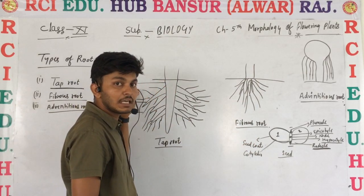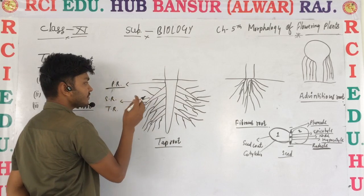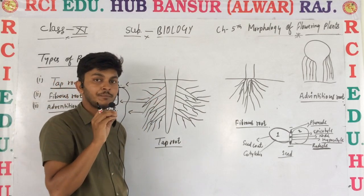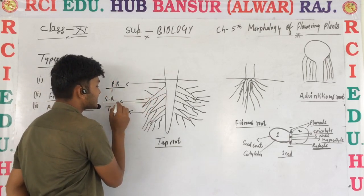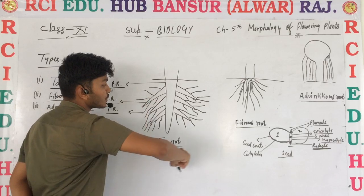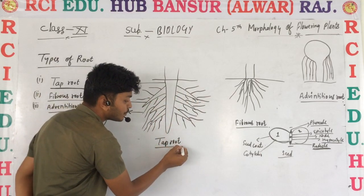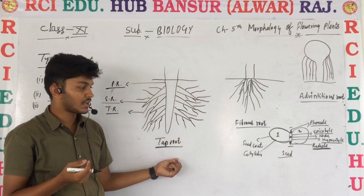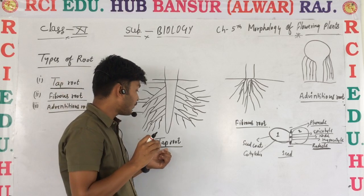In the structure of tap root, the main root that emerges is known as the primary root. The roots that emerge from the primary root are collectively called accessory roots. Within these, the root emerging directly from the primary root is the secondary root, and the roots emerging from the secondary root are known as tertiary roots. That whole complex is known as the root system. Examples include dicots such as chana, mustard, and all pulses.